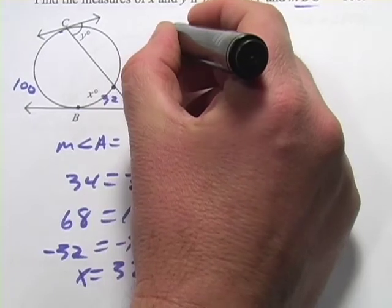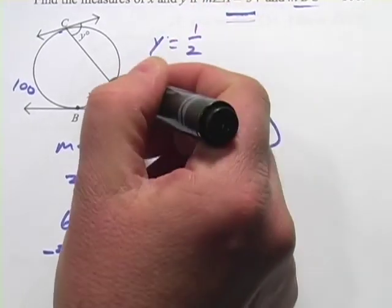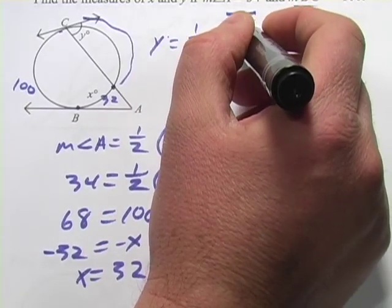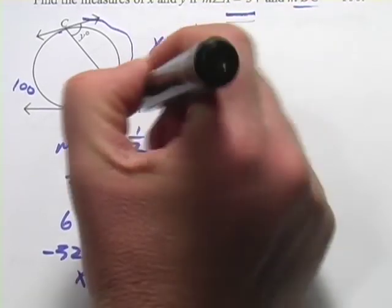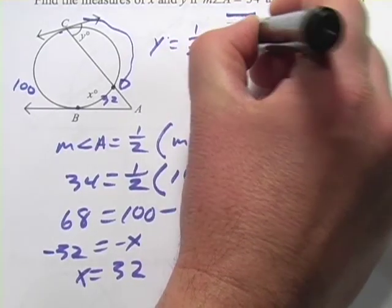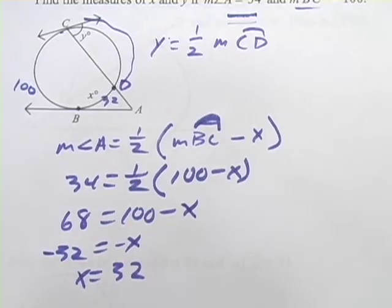Y equals one half of the arc length from here to here. Let's call that, well, we don't have a point here. Let's put one in. D, one half of the measure of arc CD. So we need to find arc CD.